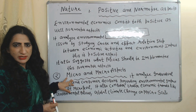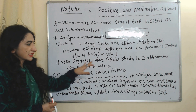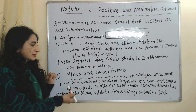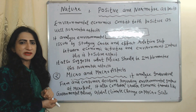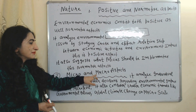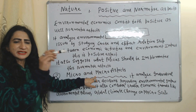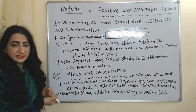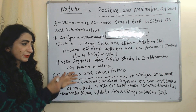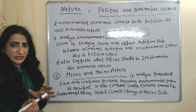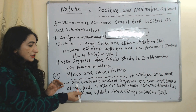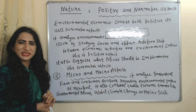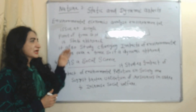Environmental economics consists of both micro as well as macro aspects. Micro means study at the individual level, and environmental economics also considers broader economic trends like government policies and global climate change on a macro scale.